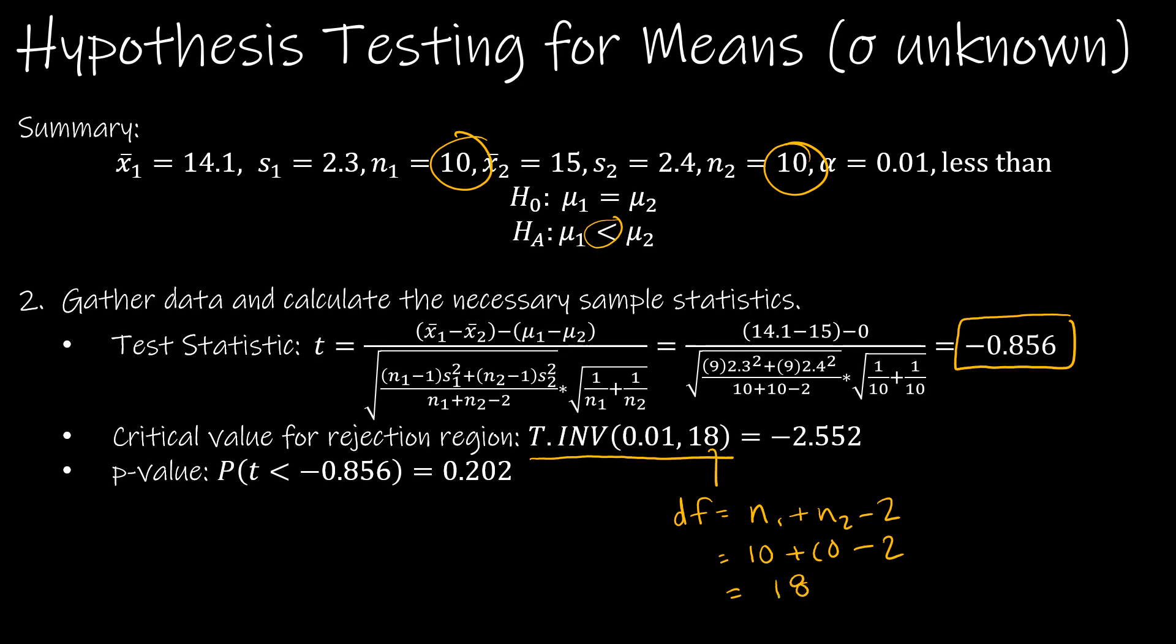That's just T inverse and then the alpha level and the degrees of freedom. And then for our P value, we are going to take T dist, and it's a left tail, so it's just going to be T dist, negative 0.856, degrees of freedom, which is 18. And there may or may not be a comma 1 for cumulative. But you should end up with our P value of 0.202.